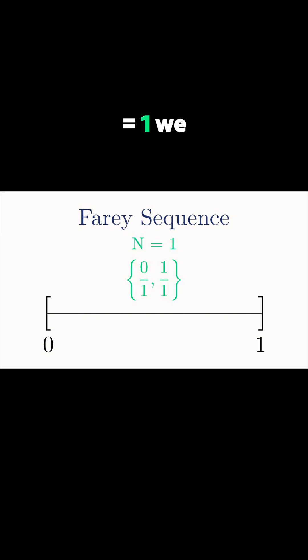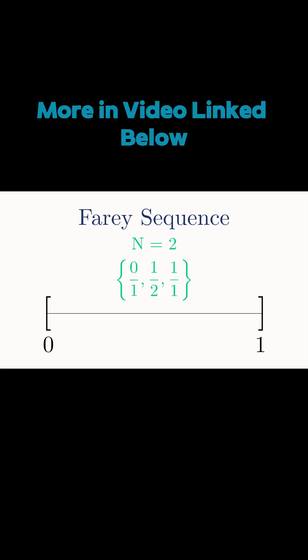So for n equals 1, we only have these two. For n equals 2, we also have one half. For n equals 3, we add two more numbers.